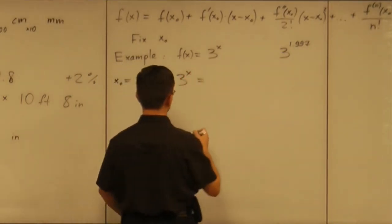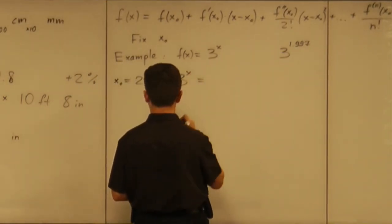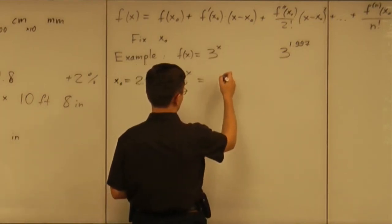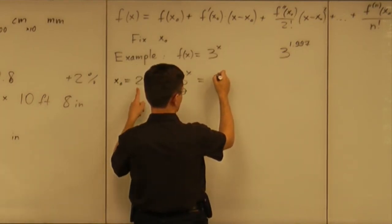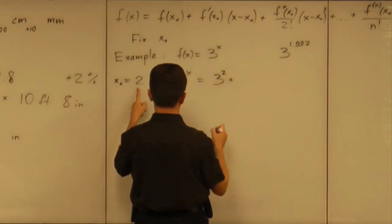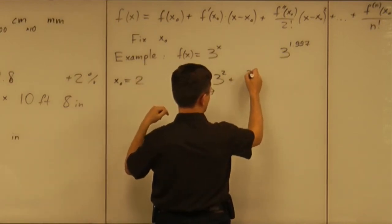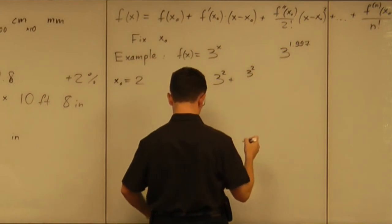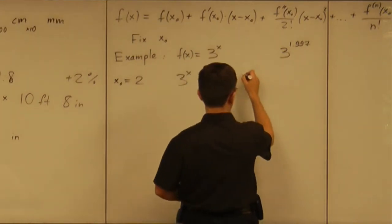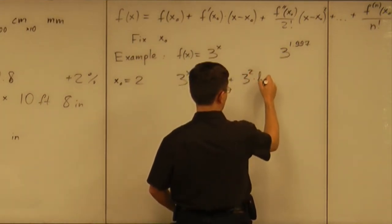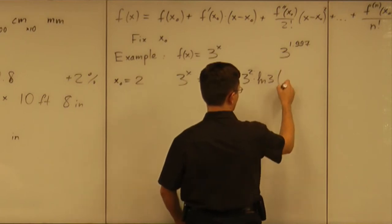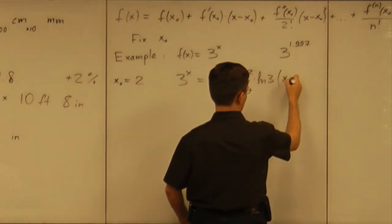3^x is equal to what? The value at 2, 3^2, plus the value of derivative. Derivative is 3^2 times natural log of 3, multiplied by x minus 2,